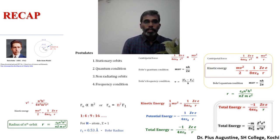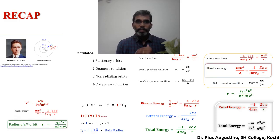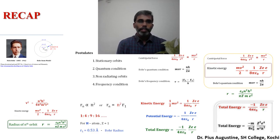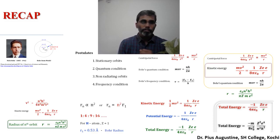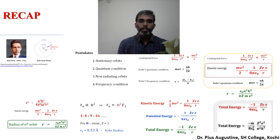The ratio of radii r₁:r₂:r₃ = 1:4:9, and so on. The velocity of electron in an orbit is proportional to n/r, depending on both the orbit number and radius. The kinetic energy is KE = mZ²e⁴ / (8ε₀²n²h²). The potential energy is PE = −mZ²e⁴ / (4ε₀²n²h²). The total energy, the sum of kinetic and potential energy, is E = −mZ²e⁴ / (8ε₀²n²h²).